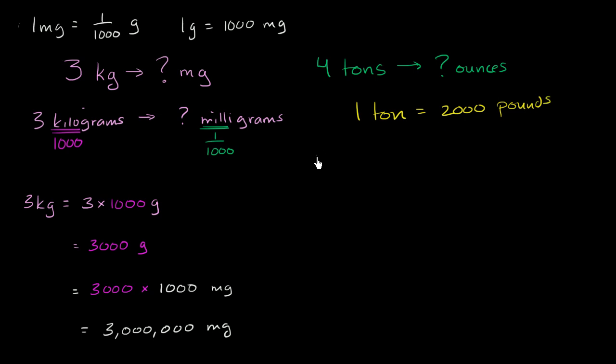So four tons are going to be equal to, well, each of those are going to be 2,000 pounds. It's going to be four times 2,000 pounds, which is equal to 8,000 pounds.